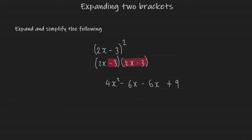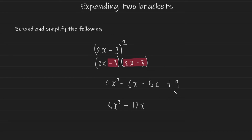So now if we go ahead and simplify this by collecting like terms, we're going to have 4x squared, since there is no other x squared term to combine with it. And then we're going to have minus 6x subtract another 6x, which gives us minus 12x. And of course we have the plus 9 at the end. And that's how you'd expand double brackets when you have an expression being raised to the power of 2.